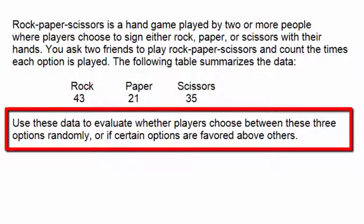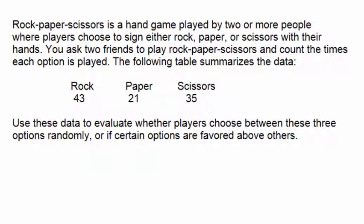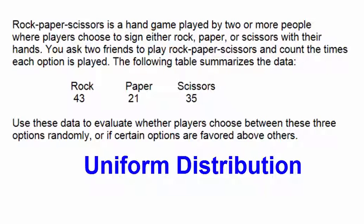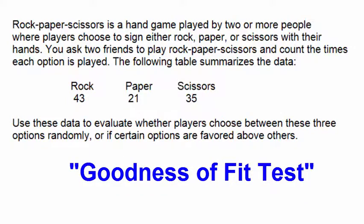Use these data to evaluate whether players choose between these three options randomly or if certain options are favored above others. If the players choose between these three options randomly, then the three options should form what would be called a uniform distribution, and to test if these three options form a uniform distribution we'll use the goodness of fit test.